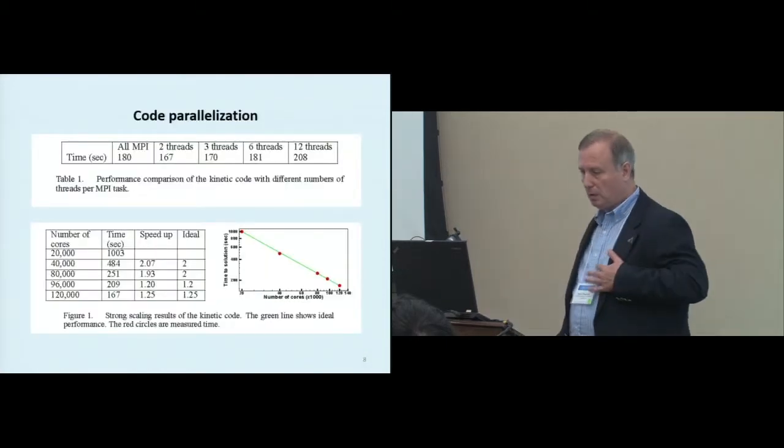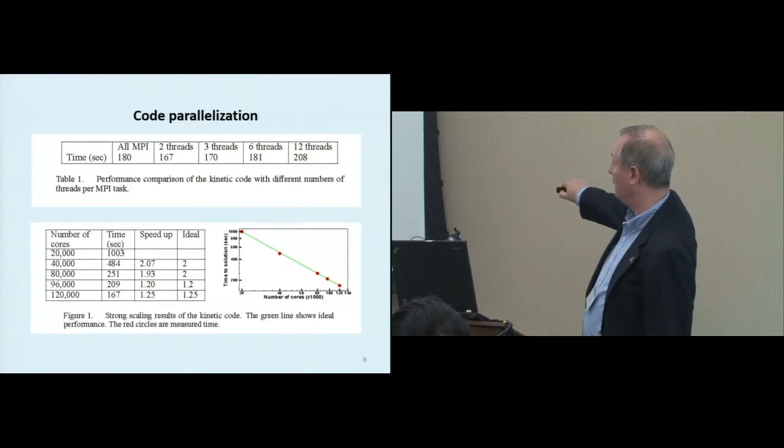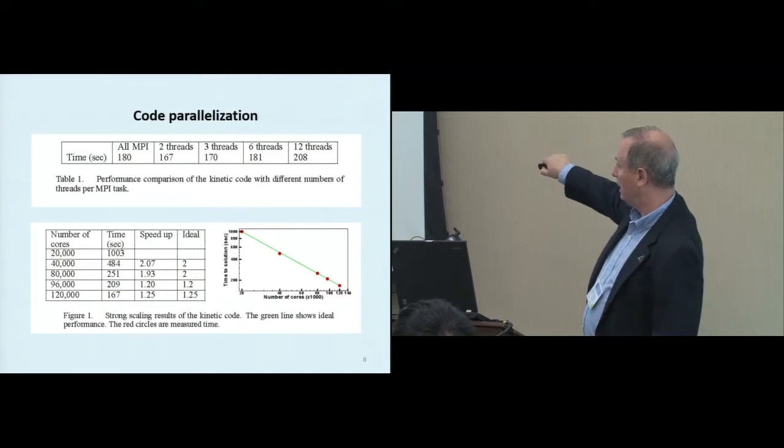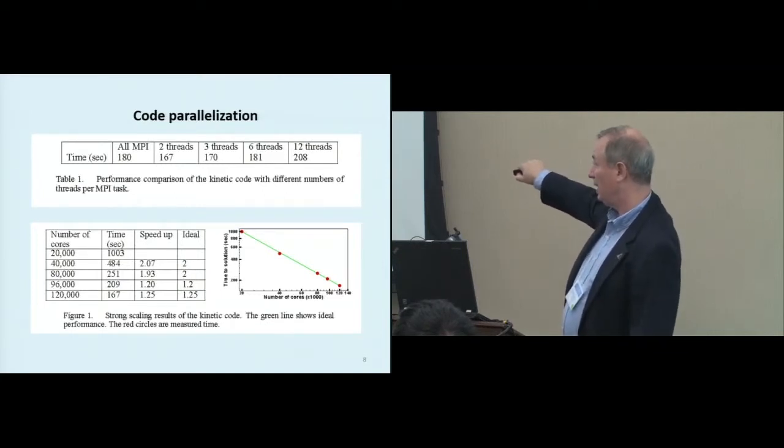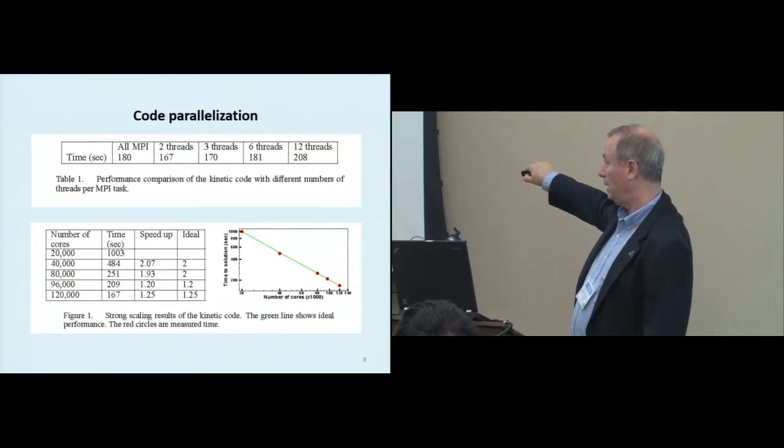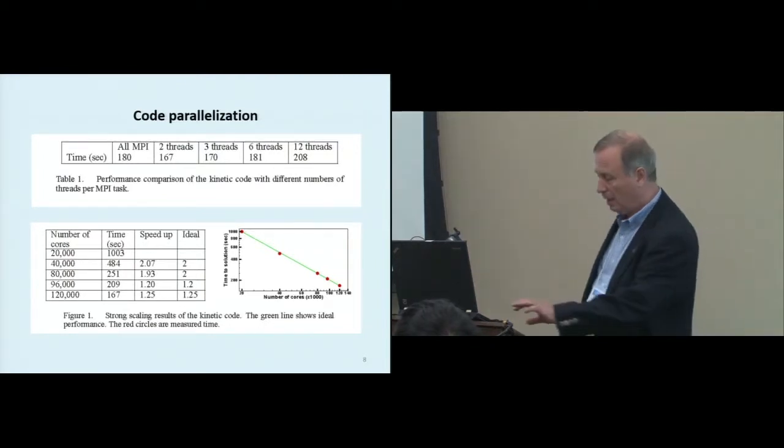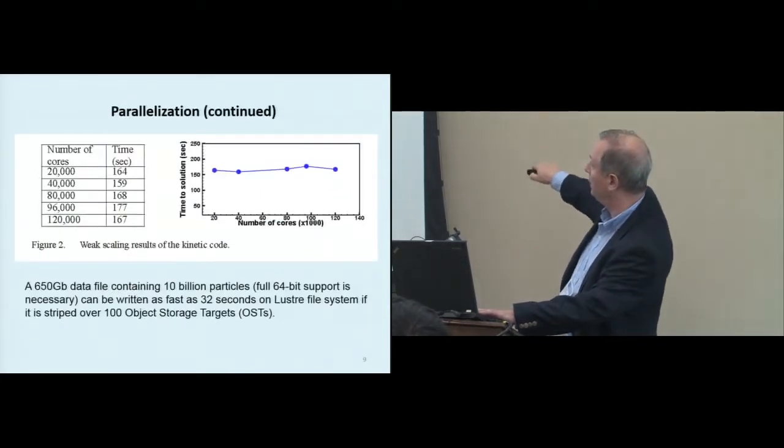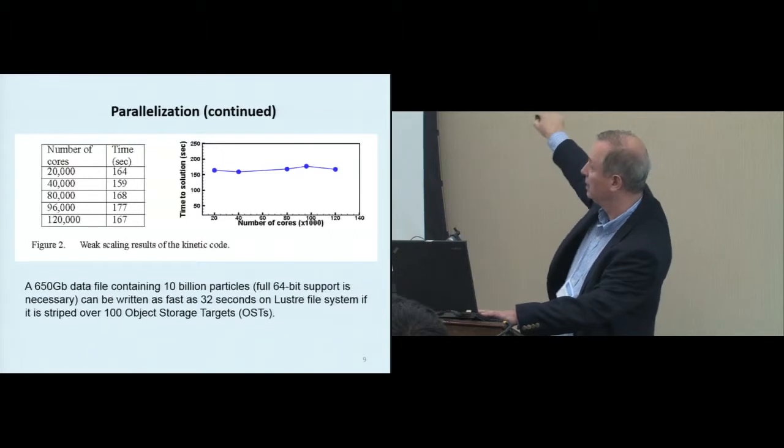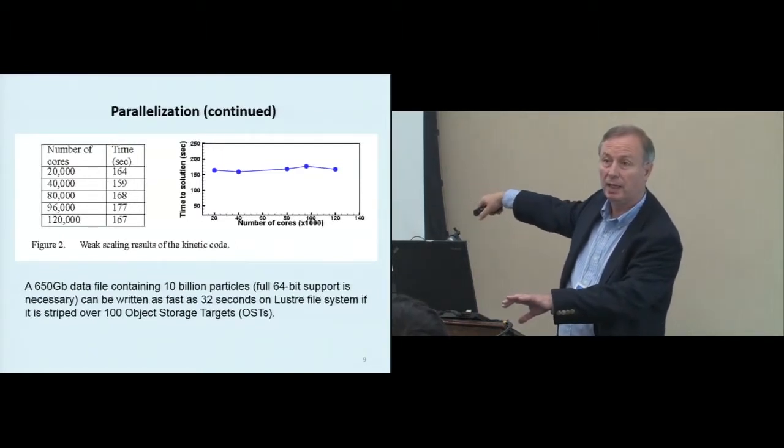Not much time to talk about the parallelization. Right here we show the strong and weak scaling on the next slide, up to 120,000 cores. It just continues to 160,000. We didn't try more than that. Pretty linear, very nice weak scaling, just nearly constant, sometimes even super scaling.